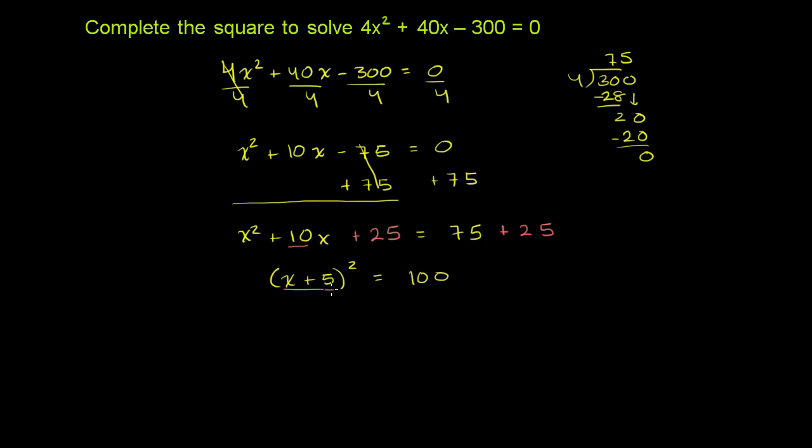And so now we're saying that something squared is equal to 100. So this something right over here, if I say something squared is equal to 100, that means that that something is one of the square roots of 100. And we know that 100 has two square roots. It has positive 10 and it has negative 10. So we could say that x plus 5, the something that we were squaring, that must be equal to the plus or minus square root of 100, or plus or minus 10.